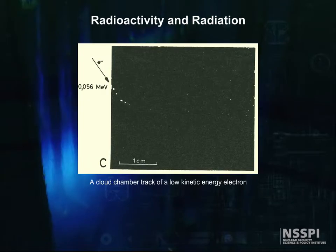The next figure is a cloud chamber track of a low kinetic energy electron, or if you will, the track of a high energy electron near the end of its range where it's lost most of its kinetic energy.